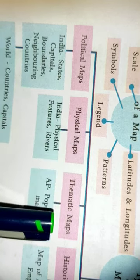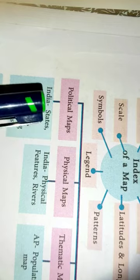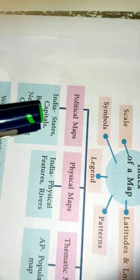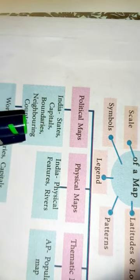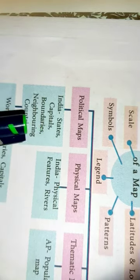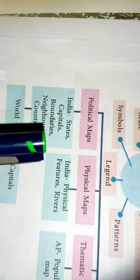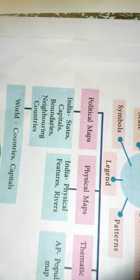The second topic is types of maps. Types of maps: the first is political maps, the second is physical maps, the third is thematic maps, and the fourth is historical maps. Political maps indicate India's states, capitals, boundaries, neighboring countries, and also the world's countries and capitals.